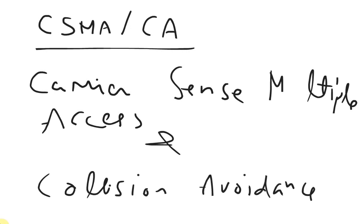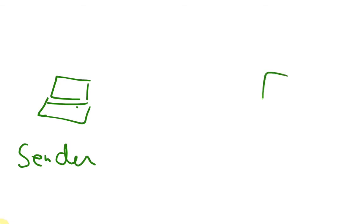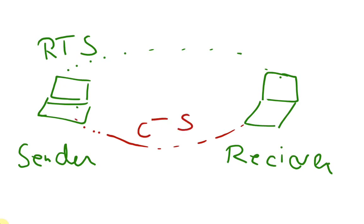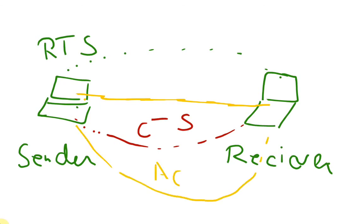To understand how these networks operate, suppose we have two laptops — a sender and a receiver. The sender sends an RTS, a Request to Send. If the receiver can receive the data, it sends CTS — Clear to Send — telling the sender it can proceed. The sender then sends the data, and once received, the receiver sends an acknowledgement confirming receipt.